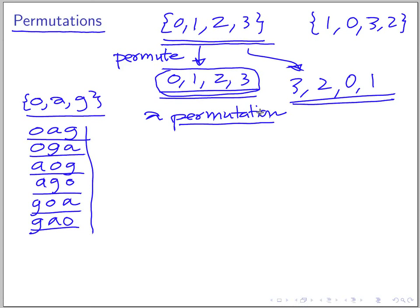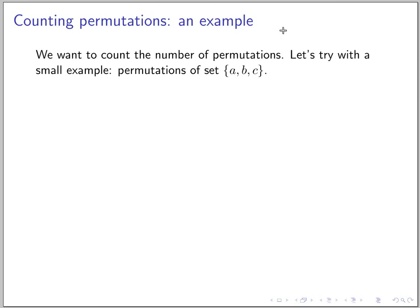A permutation is one way to order all elements of a set. Let's count permutations concretely for the set {a, b, c}. This set has three elements, so we need to pick all three. For the first position, we can pick either a, b, or c.